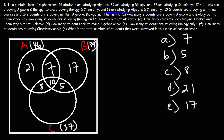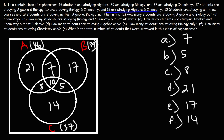Part F: how many students are studying chemistry only? We take the total number studying chemistry and subtract the three overlap values: 37 minus 8, minus 10, minus 5. That gives us 14 students who are studying chemistry only.